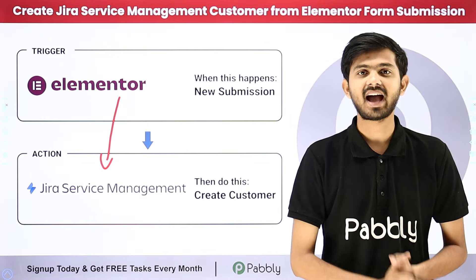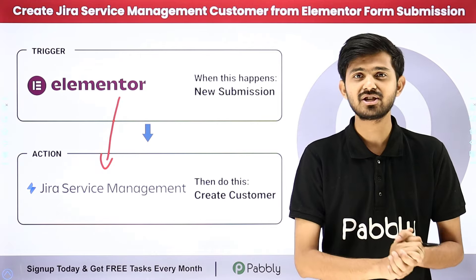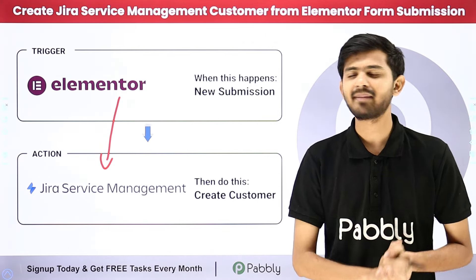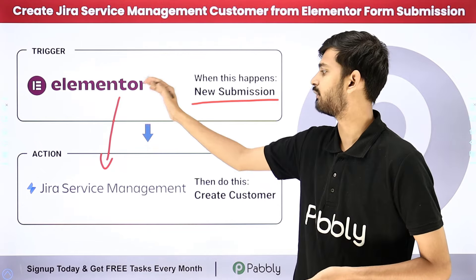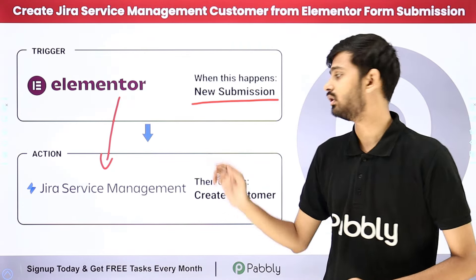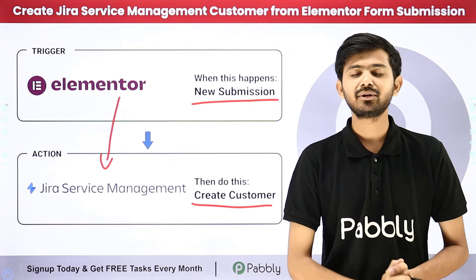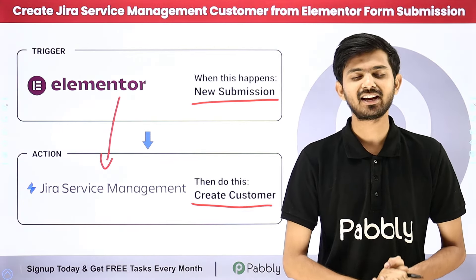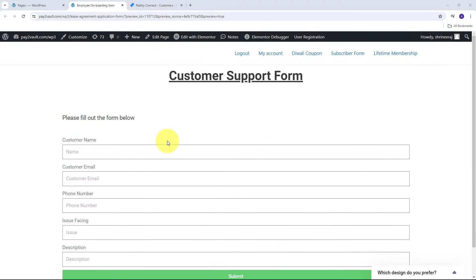To build this connection between Elementor form and Jira Service Management, I'm going to use Pabbly Connect. Pabbly Connect is an amazing software for automation and integration. With Pabbly Connect, as I receive a new form submission from Elementor form, it will automatically create a new customer in Jira Service Management. Let me take you to my computer screen to show you how I'm going to build this connection.